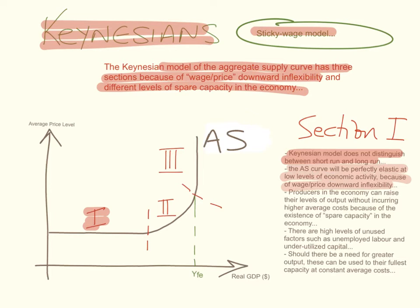Prices usually go up but they rarely go down in an economy because of this downward inflexibility. Wages and prices are sticky, and when times are bad, firms are more likely to fire workers rather than cut their wages, and they're less likely to cut prices. So in section one, producers in the economy can raise their levels of output without incurring higher average costs because of the existence of spare capacity. There are high levels of unused factors of production, such as unemployed labor and underutilized capital.